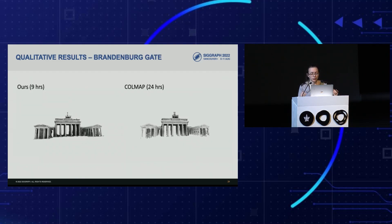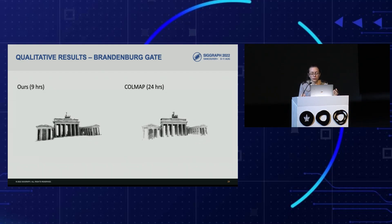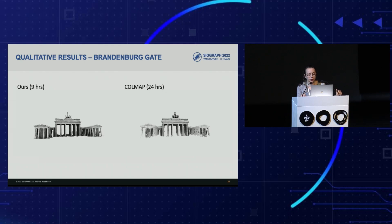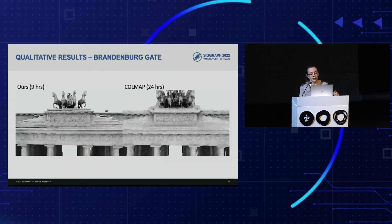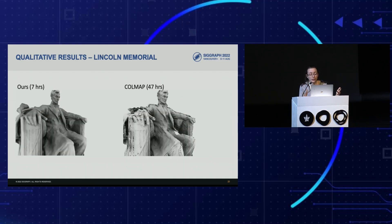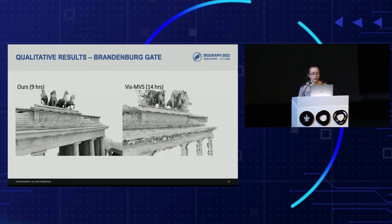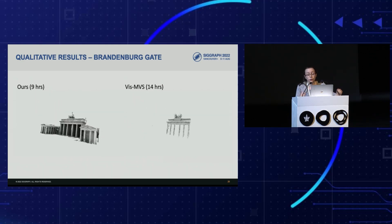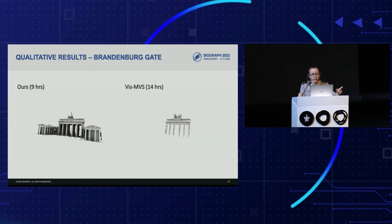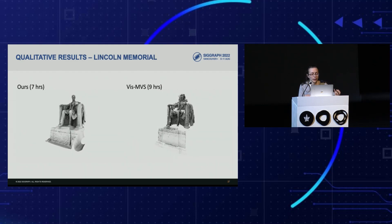Moving on to results — I'll start with qualitative comparisons to several baselines. First is a comparison with COLMAP, a state-of-the-art classic multi-view stereo algorithm followed by Poisson surface reconstruction. Our method produces cleaner reconstructions and is nearly three times faster. On the Lincoln Memorial, our method also produces cleaner and more complete results. We also compare with VisMVS, a state-of-the-art learning-based multi-view stereo algorithm, fusing its depth maps via Poisson surface reconstruction. Our results are more complete and less noisy, as shown on the Brandenburg Gate and the Lincoln Memorial.